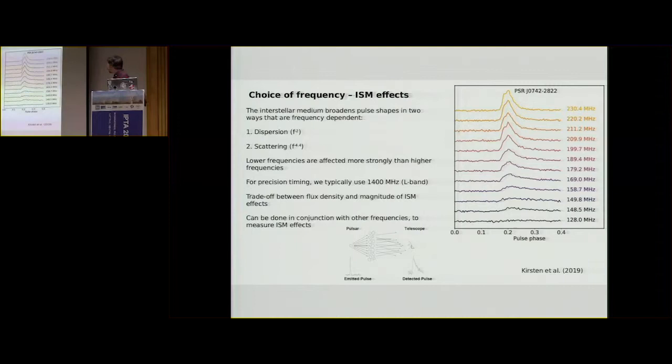We can see the pulse profile that has this... You can still kind of discern this kind of exponential scattering tail on the trailing edge. But as you go to lower and lower frequencies, it gets broader and broader and broader. And eventually, by the time you get down to 128 megahertz, it's completely washed out. So this arises from the multipath propagation effect of scattering. And at the moment, there aren't any really standard ways that we remove it from our observations.